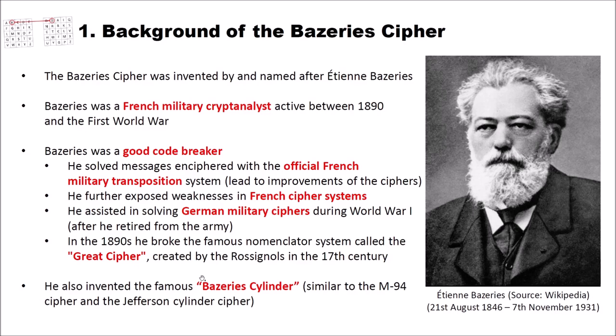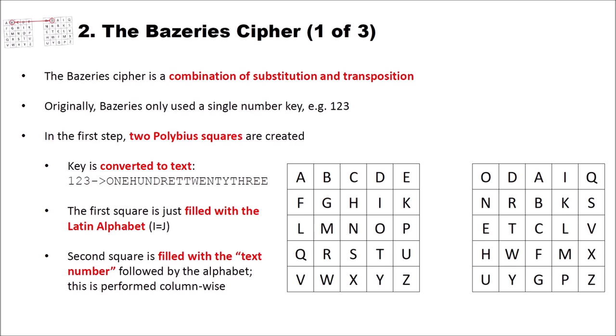How does the Bazeries cipher work? The Bazeries cipher is a combination of substitution and transposition. Originally Bazeries only used a single number key, for example 123.